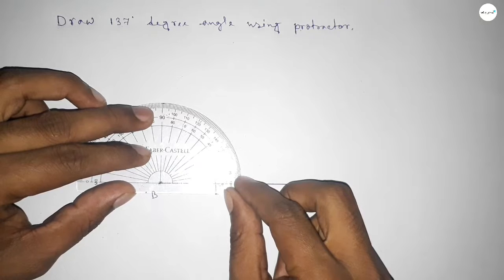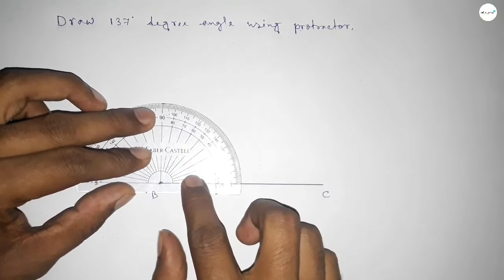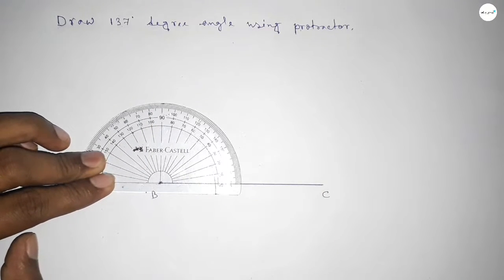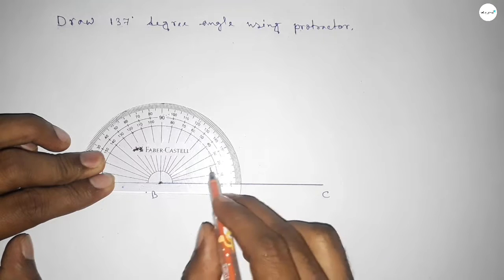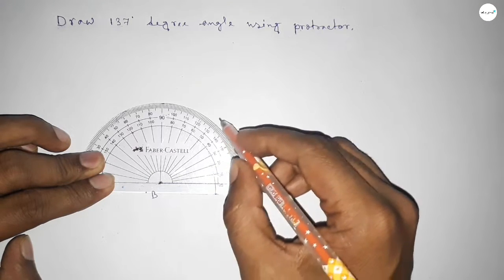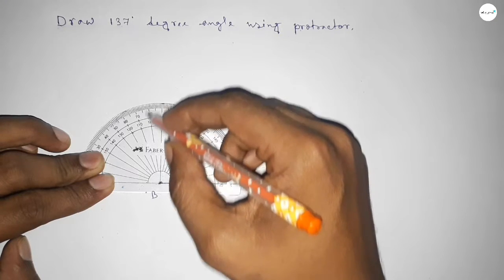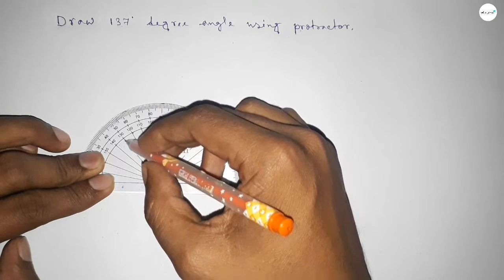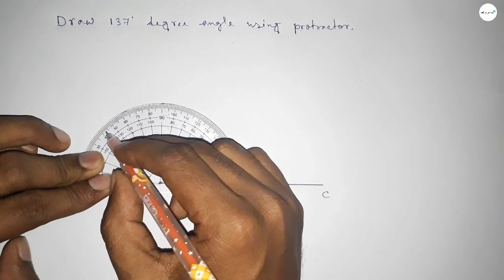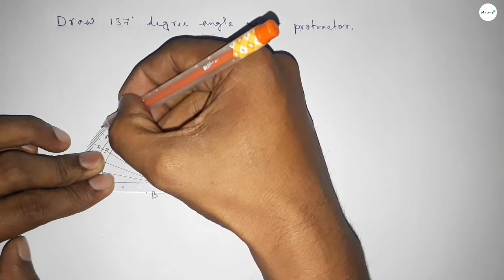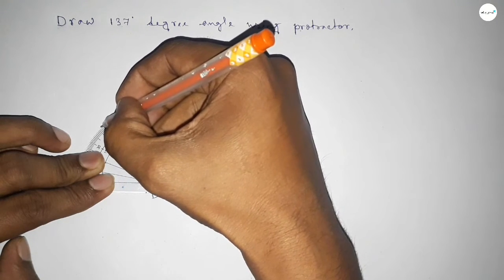Then counting the angles. So this is starting angle: 0, 10, 20, 30, 40, 50, 60, 70, 80, 90, 100, 110, 120, 130, 135, 136, 137. So this is 137 degrees.